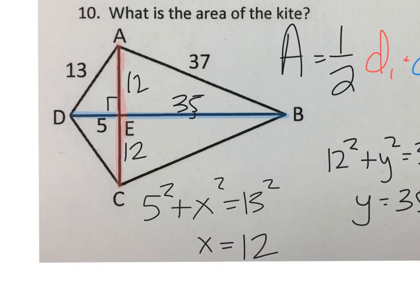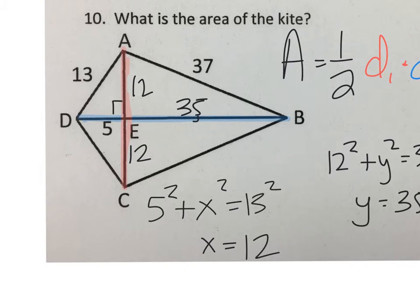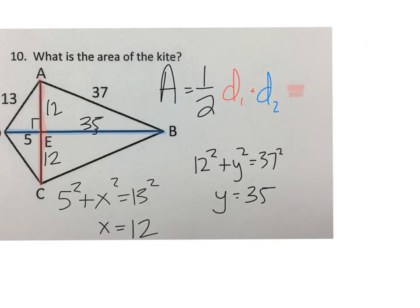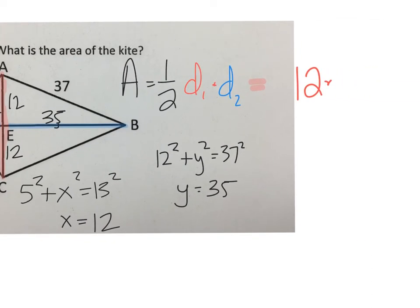So I have to use Pythagoras twice in order to figure out what my missing lengths for my diagonals are. Now that I know those, one diagonal is 12 and the other diagonal is, let's see, 5 and 35 is 40. Don't forget about the one-half.